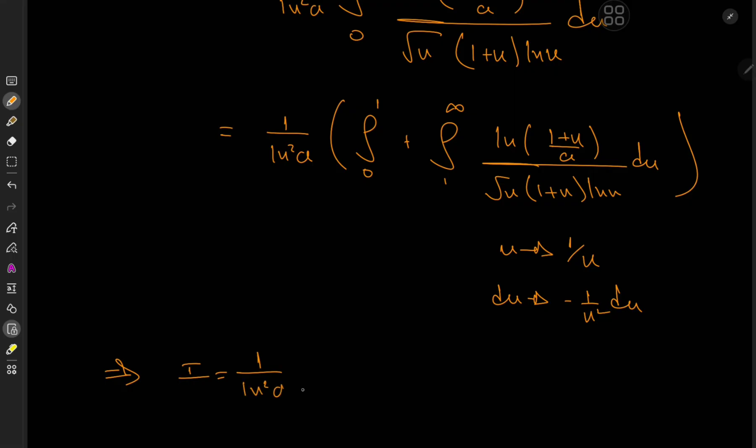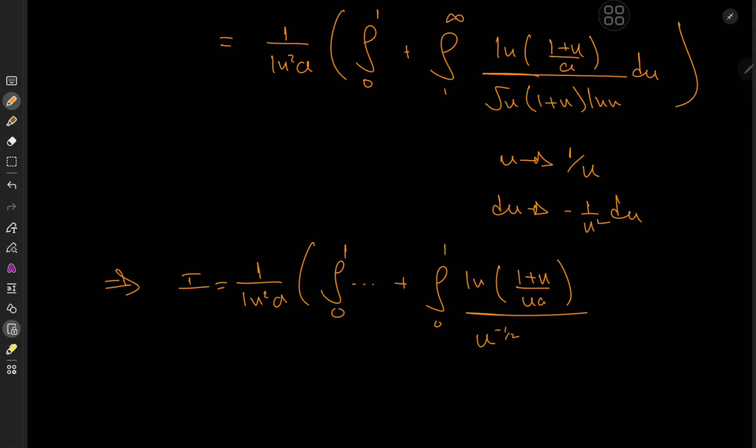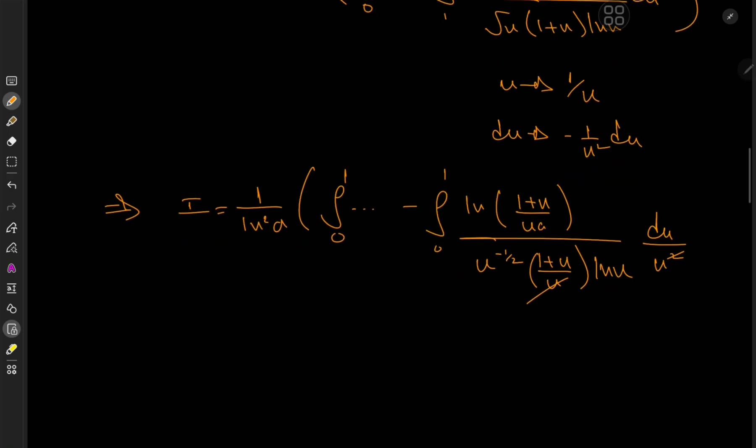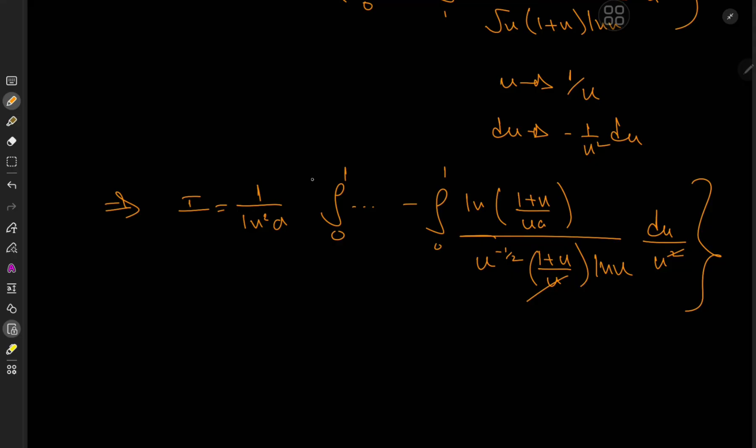So this implies that I here equals 1 over log squared a times the integral from 0 to 1 of a bunch of stuff, plus the integral from 0 to 1. Remember, I've switched up the limits to get rid of this negative sign. What exactly? Okay, so this is log of (1 + 1/u) is supposed to be (u + 1)/u, right? So I can write this as (1 + u)/u times a over root u would be now u to the negative one half. Then I have a (1 + u)/u term again, then I have log(1/u), which of course is equal to negative log(u). So let me take that negative sign outside and hopefully not lose track of anything. So then we have du over u squared. The u canceled out with the u squared term.